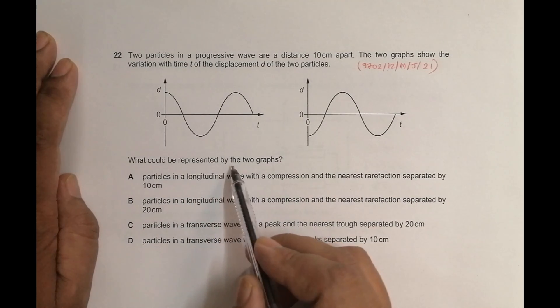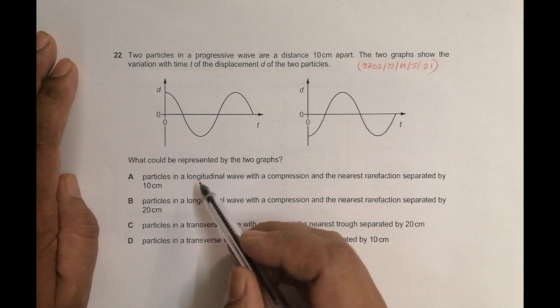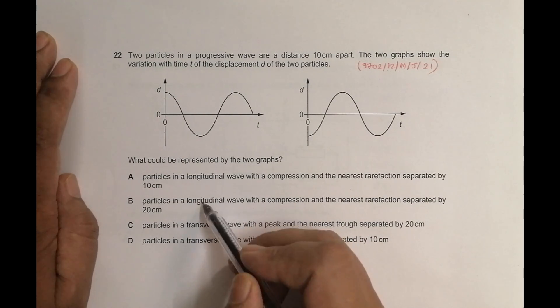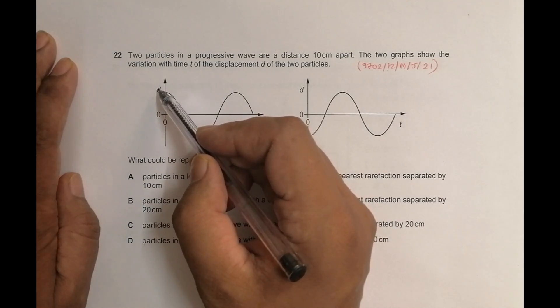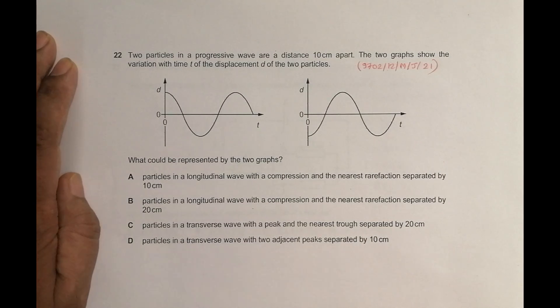So what could be represented by the two graphs? The first two choices have got longitudinal wave and the second two choices have got transverse waves. So this particle could be either longitudinal or transverse. For ease, let us first consider transverse. Since they are exactly opposite, they are performing exactly opposite motions.